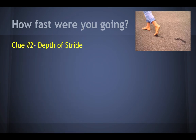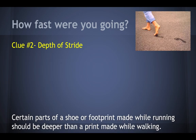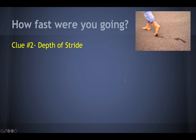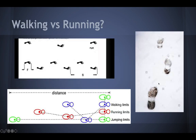Clue number two is depth of the stride. Certain parts of a shoe or footprint made while running should appear deeper than a print made while walking. This depends on the person's running style. If someone tends to run on their toes, the spot their toe hits the ground would be way deeper than if they're just walking. Other people might do more of a push-off, landing more on their heels with toes barely touching the ground. It just depends on the person's running style.